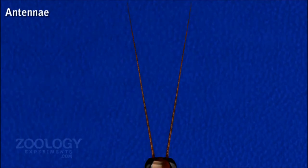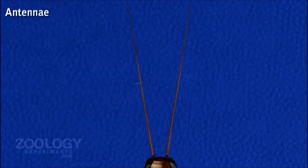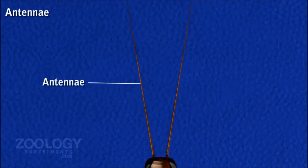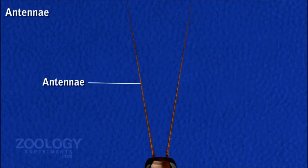Antenna. Antennae are a pair of long, slender, whip-like and many-jointed movable appendages, which are found on the head. In male cockroach, the antenna is longer than the female.